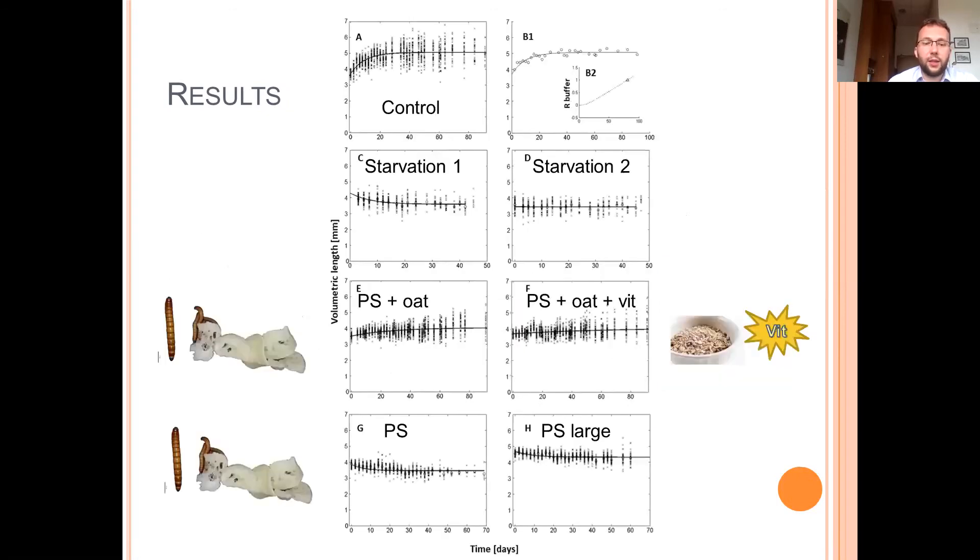And here we have the changes in volumetric length. It was growing, larvae were growing in the control group, and in groups fed with PS with some additives and with some supplements.